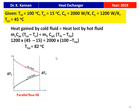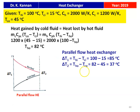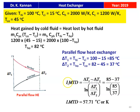This is the temperature profile of the parallel flow heat exchanger. Both fluids enter on the left side, so ΔT1 = THI − TCI = 100 − 15 = 85°C. Both fluids leave on the right side, so ΔT2 = THO − TCO = 82 − 45 = 37°C. LMTD = (ΔT1 − ΔT2) / ln(ΔT1/ΔT2) = (85 − 37) / ln(85/37) = 57.71°C or Kelvin. Both are equal because we are calculating temperature difference.